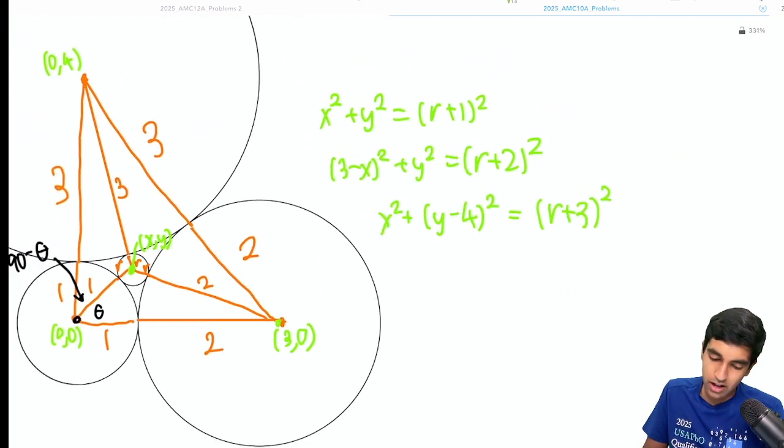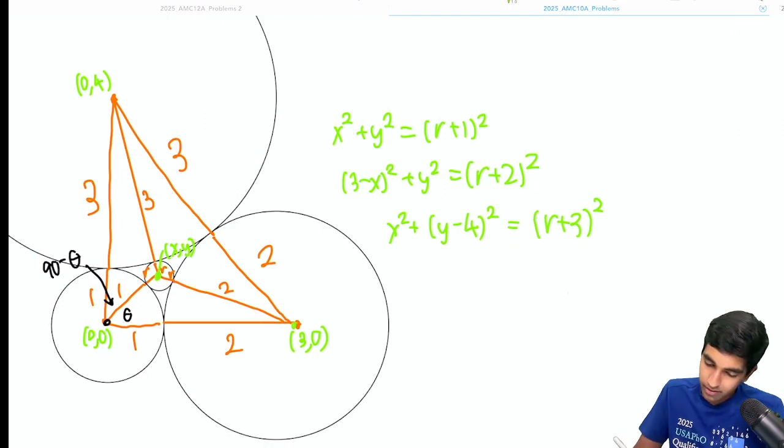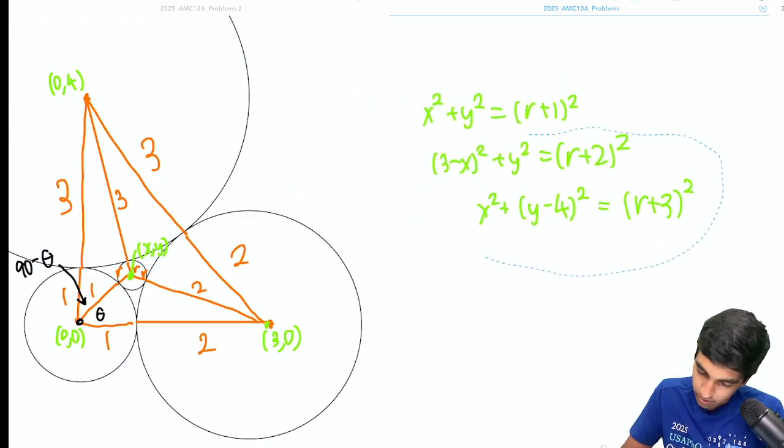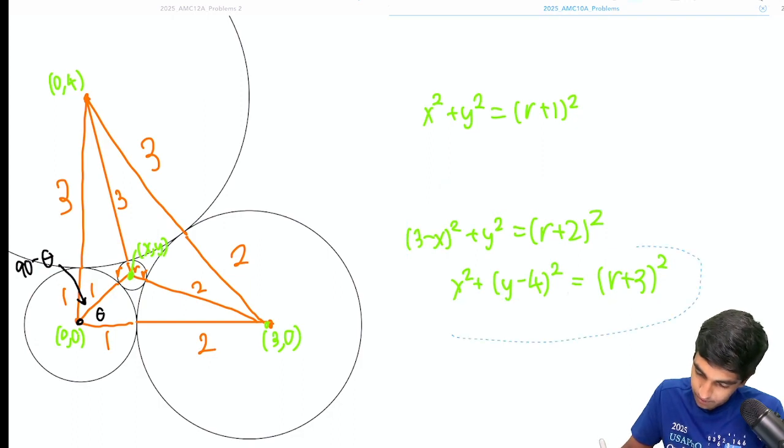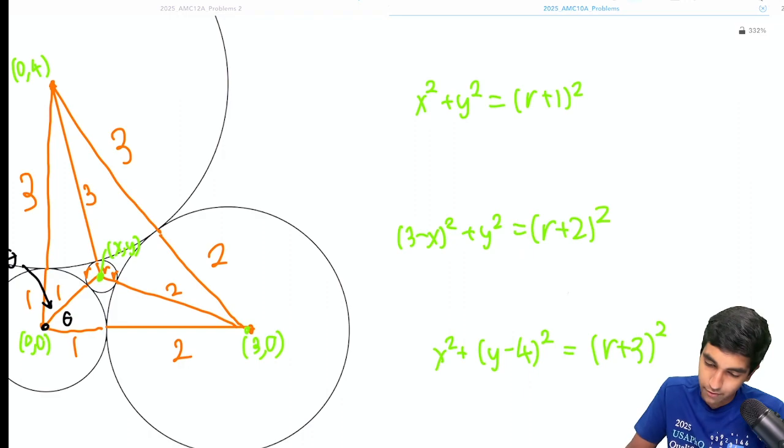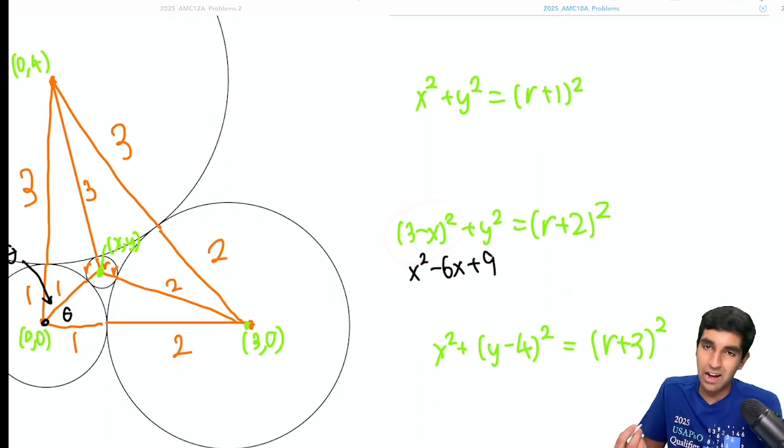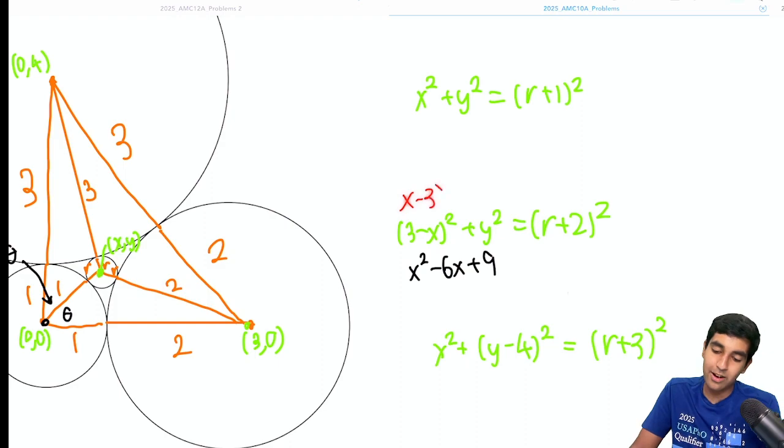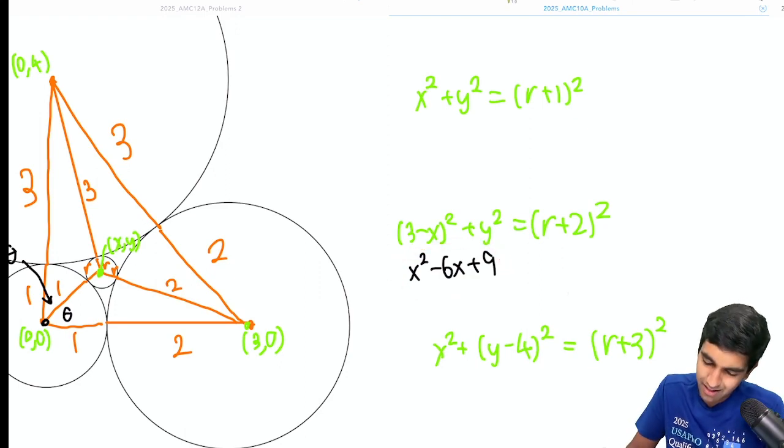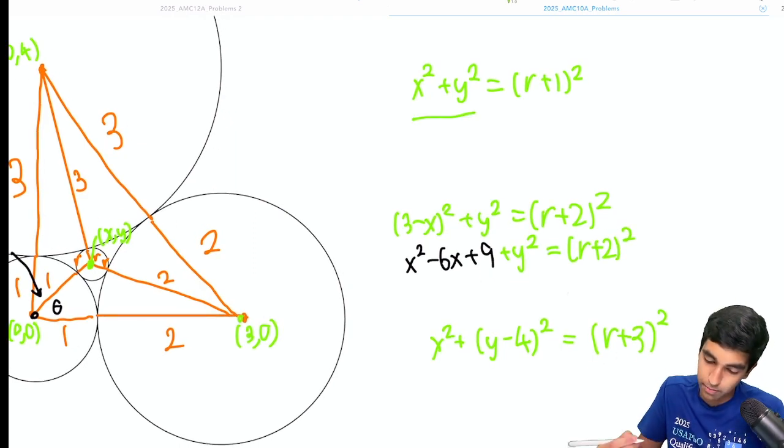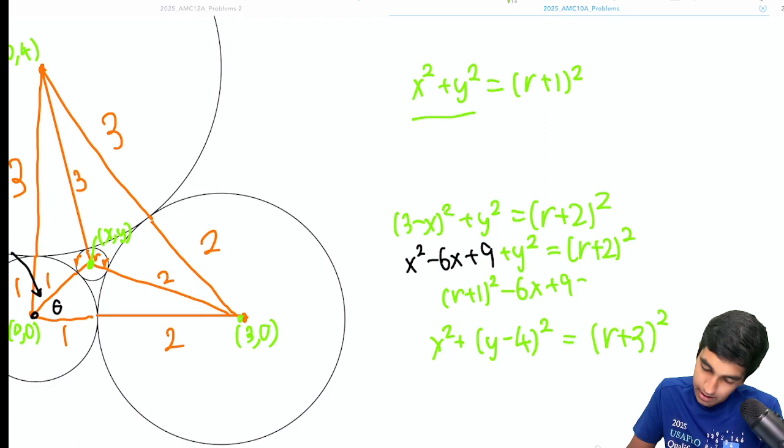And then now we just have a system of equations to solve. The idea is we want to represent, let's just work through it. Let's just expand this out. So the key thing here is what makes this really nice is if we expand this out, it's almost the same as the first equation. x squared minus 6x plus 9. Whenever we have this, I always just mentally think of it as x minus 3 squared because the negative inside is not doing anything to the square. That makes it much easier to think of this. And notice that we know that x squared plus y squared is r plus 1 squared. So we have r plus 1 squared minus 6x plus 9 equals r plus 2 squared.